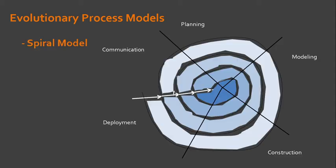Another model under evolutionary process models is what we call the Spiral Model. The Spiral Model is an evolutionary software process model that couples the iterative nature of prototyping with the controlled and systematic aspects of the waterfall model.